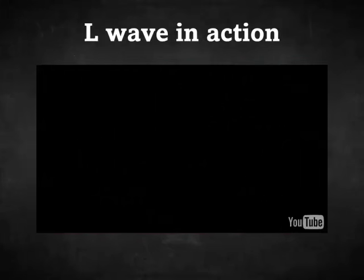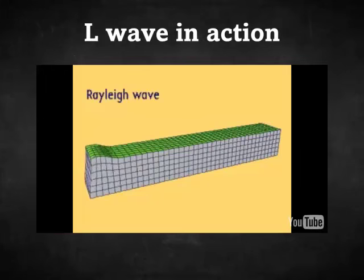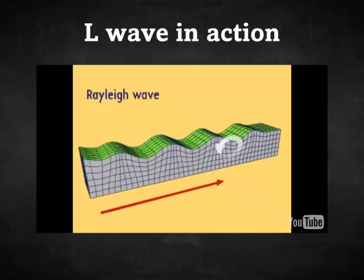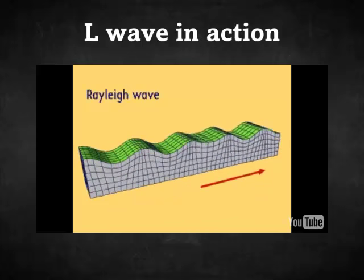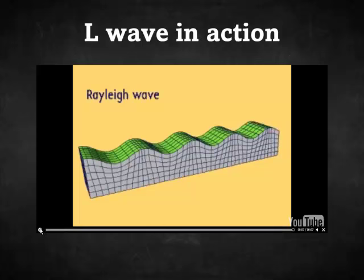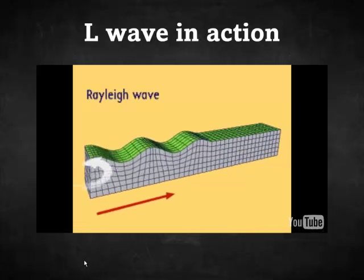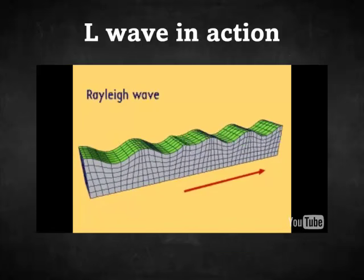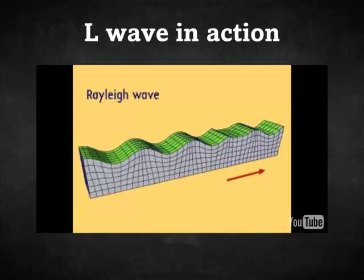Here's a good animation showing the motion of an L wave — you can see the swell going down, but there's that circular motion that causes it. When you see ocean waves, think of this. You'll know how to better get out of the way, and also understand why surface waves are the most damaging. They're also called Rayleigh waves.